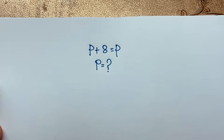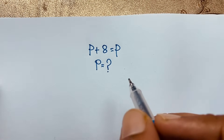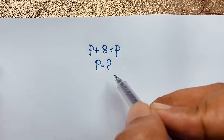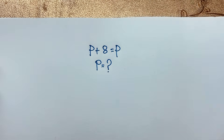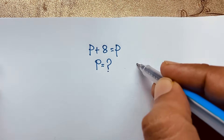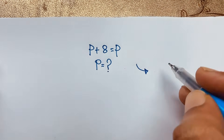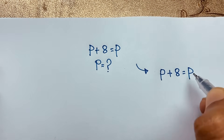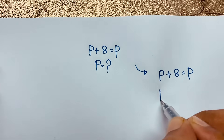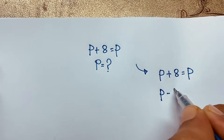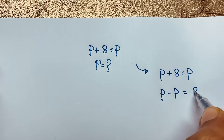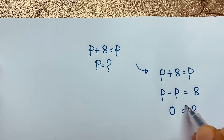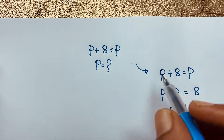Hello everyone, welcome to Rasha's classroom. Today we are solving an interesting math problem: P plus 8 is equal to P. What is P? First of all, you can see that if I move this positive P to the other side it becomes negative, giving P minus P equals 8, which is 0 equals 8. So 0 cannot equal 8, and you can easily see this question has no solution.